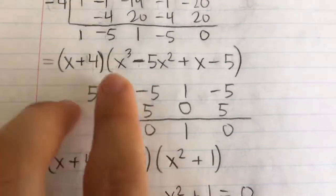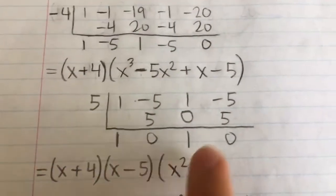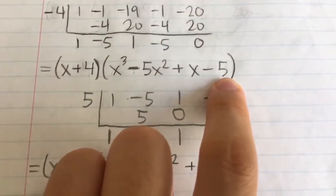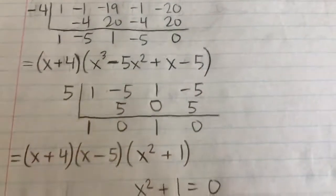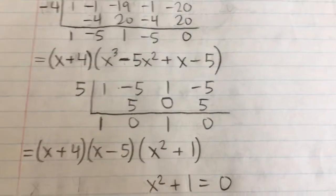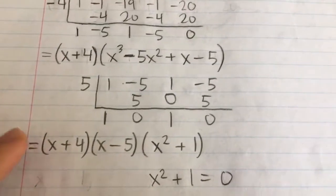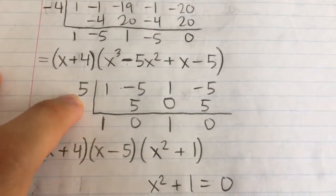Now, I still have this cubic part here, so I can factor it again. And again, we look for numbers that are a factor of the constant. And we already tried 1 and negative 1. So 5 is the only other factor, 5 and negative 5. And so 5 actually does turn out to be a factor.